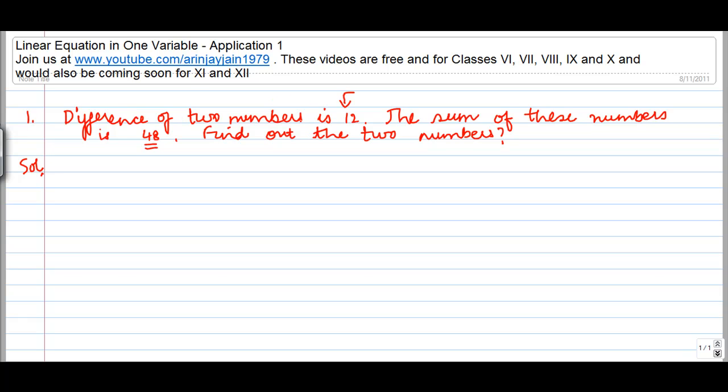Now if the difference of these two numbers is 12, this means that if one number is x, let's assume one number is x, then the other number should be x plus 12. Why? Because the difference between these two numbers is 12, so if any number is x then the other number has to be 12 greater than that number. Plain simple math logic.